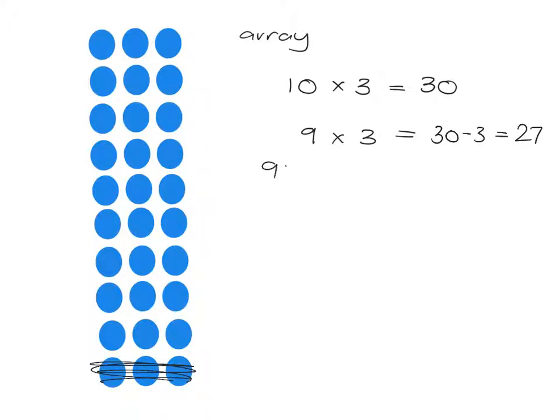So I can picture that as 9 lots of 3 is, let's go for what is the whole 10 lots of 3, but then I'm just going to take off 1 lot of 3. So easy to get to my answer.